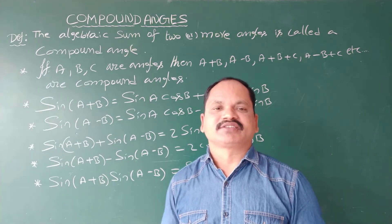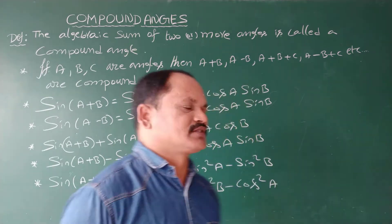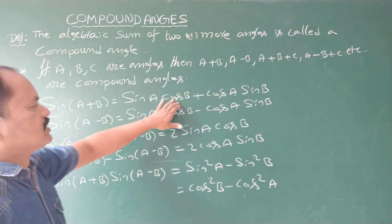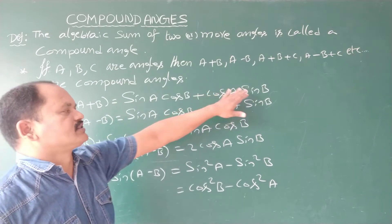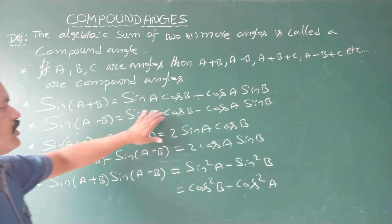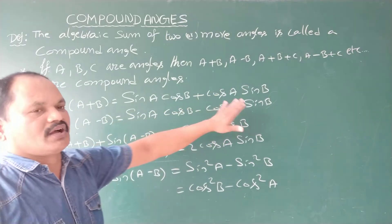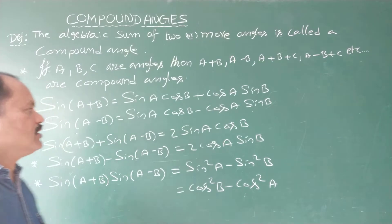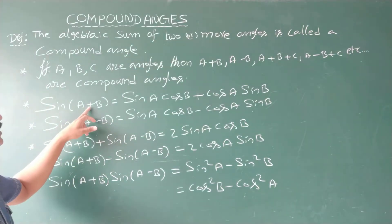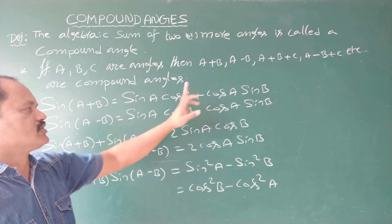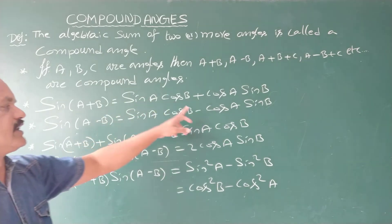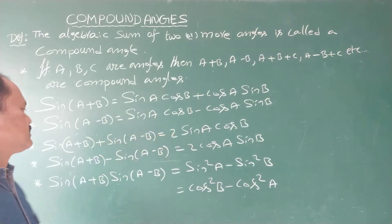These are the expansions of the sine function. Sine A plus B is sine A cos B plus cos A sine B. Sine A minus B is sine A cos B minus cos A sine B. Observe here: where it is plus, in the expansion also plus; where it is minus, in the expansion also minus.